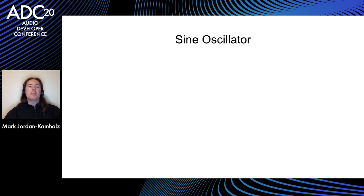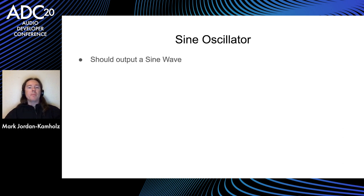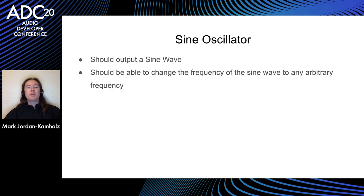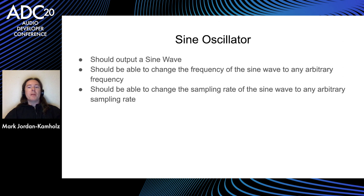I'd like to spend the first part of this talk on making a sine oscillator with test-driven development. Before we write any code, let's go through what a sine oscillator should do. Obviously, it should output a sine wave. We should be able to change the frequency to any arbitrary frequency whenever we want to, and we should also be able to do the same thing with the sample rate. I don't think this is a very great oscillator, but it's more than good enough to demonstrate how you might go about writing something with test-driven development.